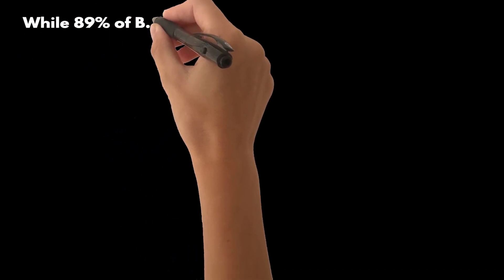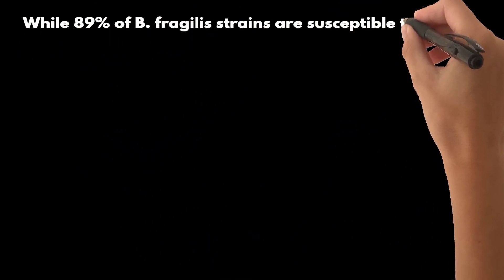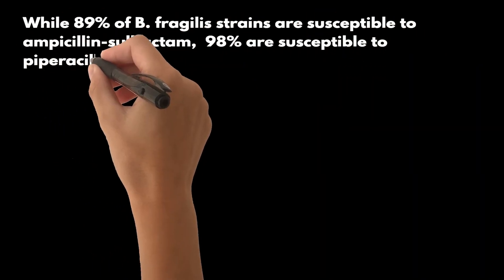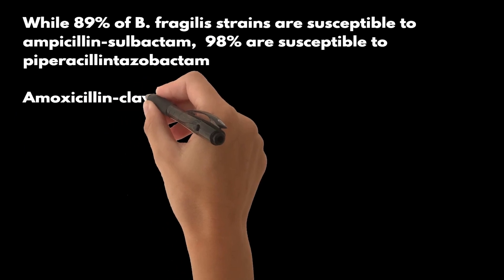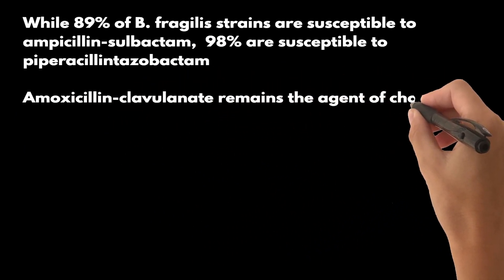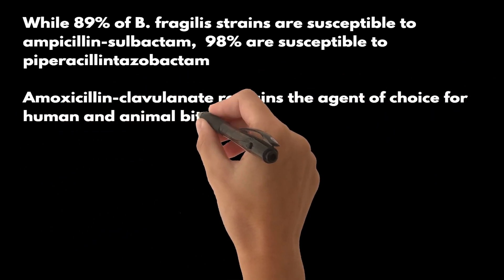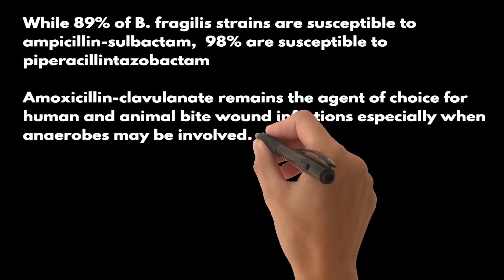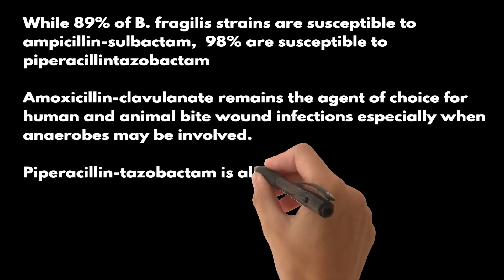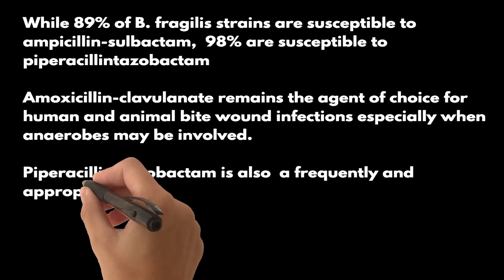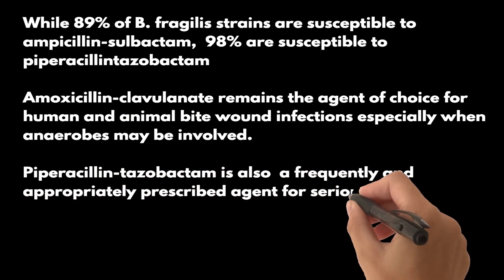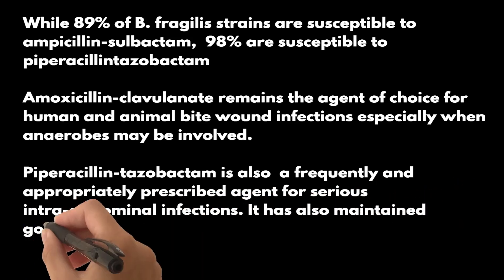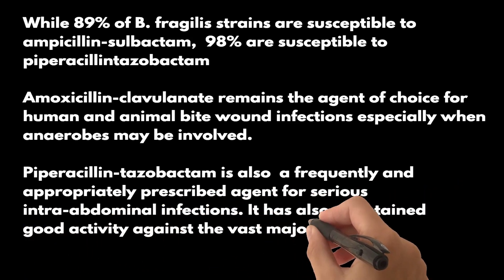While 89% of B. fragilis strains are susceptible to ampicillin-sulbactam, 98% are susceptible to piperacillin-tazobactam. Amoxicillin-clavulanate remains the agent of choice for human and animal bite wound infections, especially when anaerobes may be involved. Piperacillin-tazobactam is also a frequently and appropriately prescribed agent for serious intra-abdominal infections, and has maintained good activity against the vast majority of anaerobes.